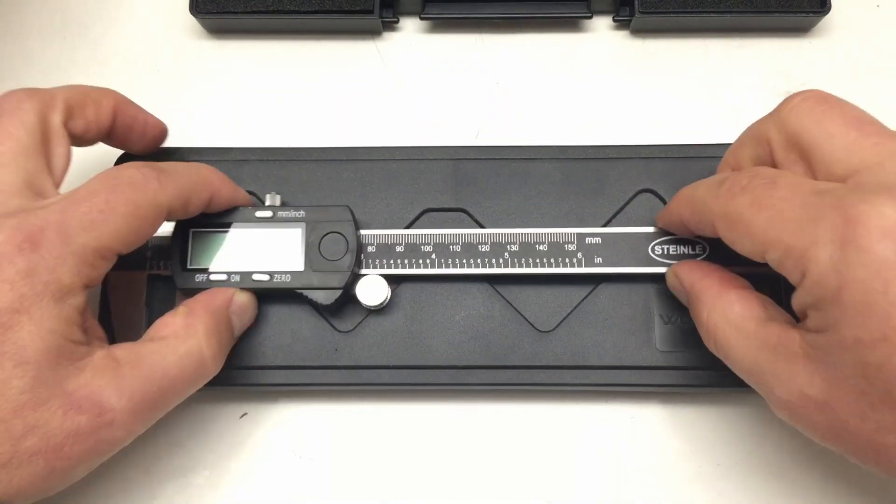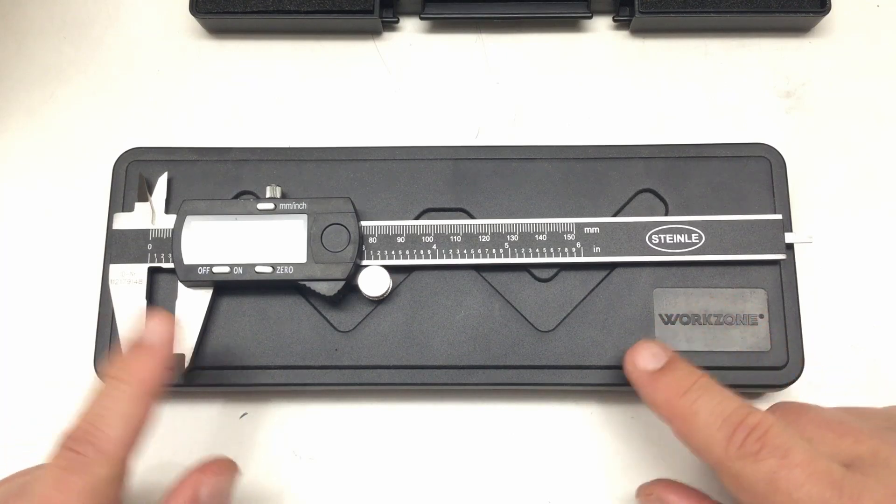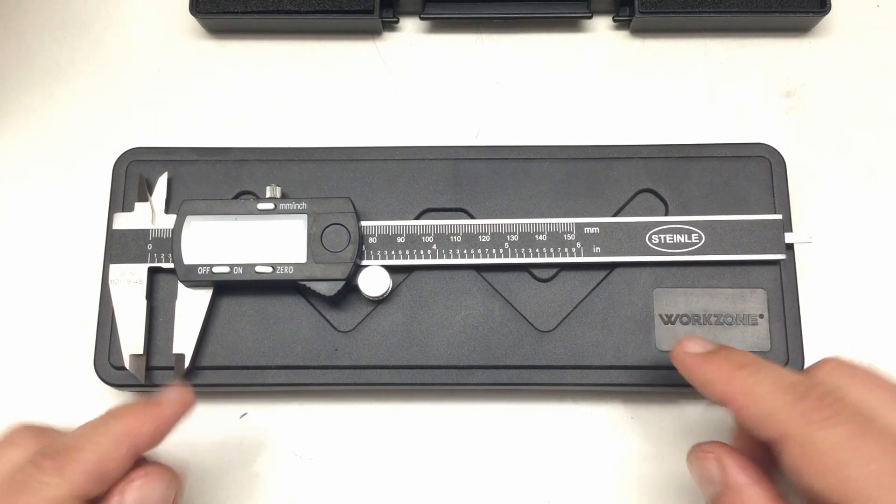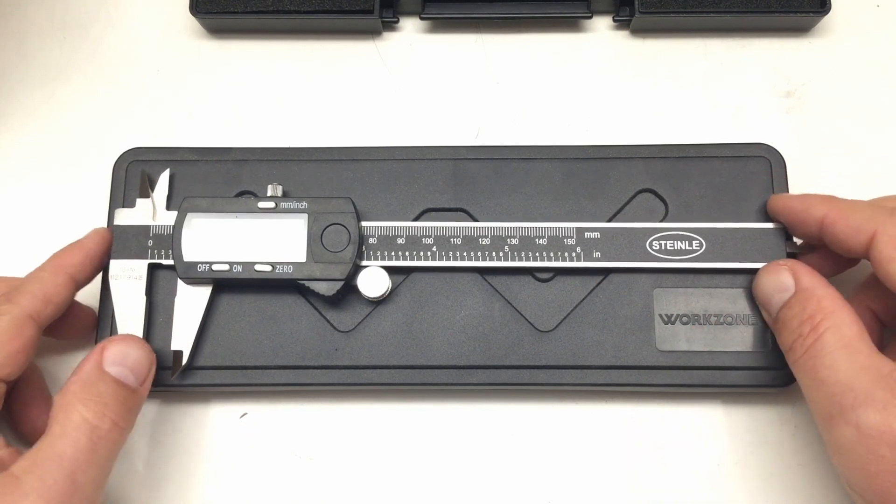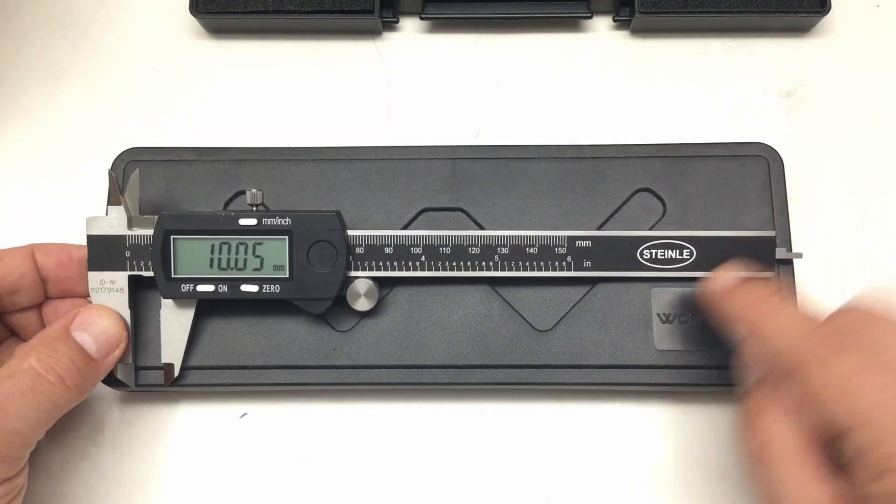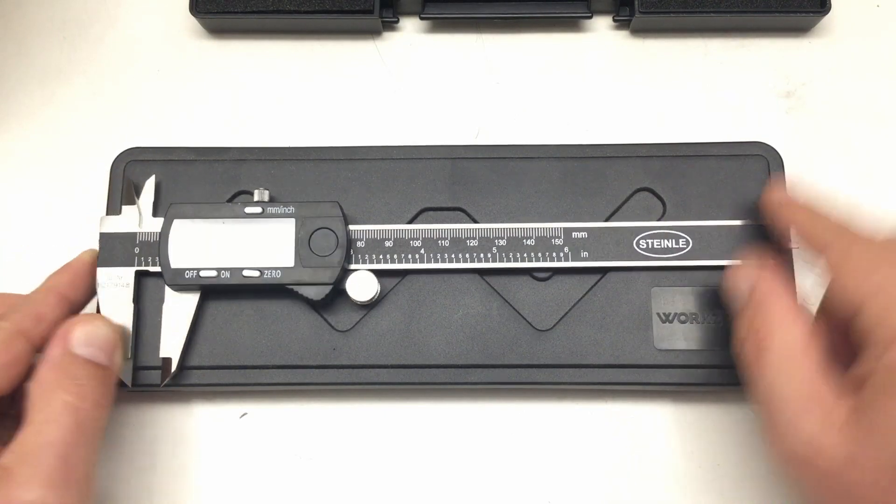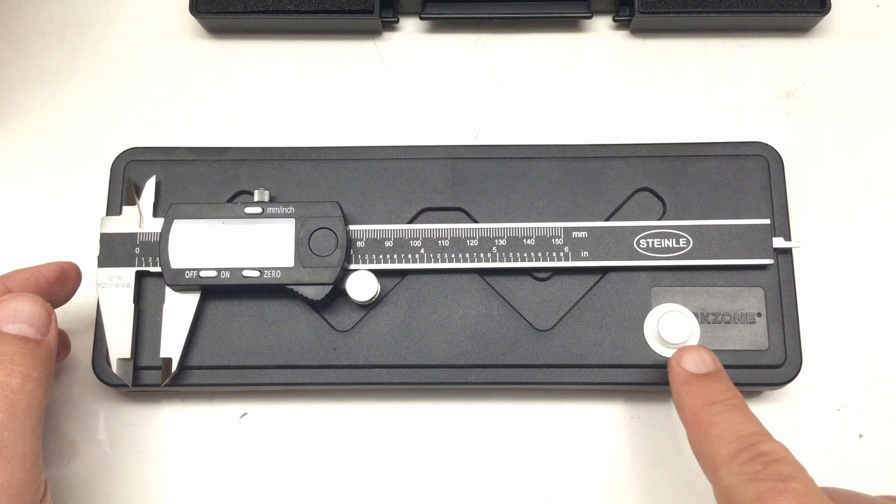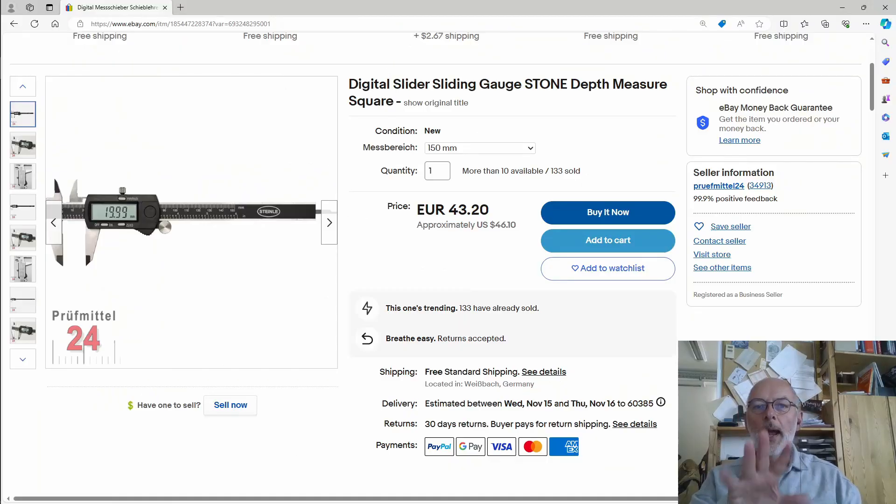So I thought I'd invest a little bit more now. I didn't want to buy these really expensive calipers that cost over €100, but I think that's a good middle ground. It's a German company, Steinle, and it came with a spare battery. That's good. And here's the eBay listing, so it was only €43.20 with free shipping from Prüfmittel 24, measurement gear 24 or something like that.